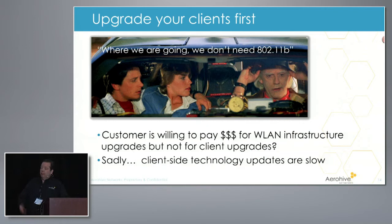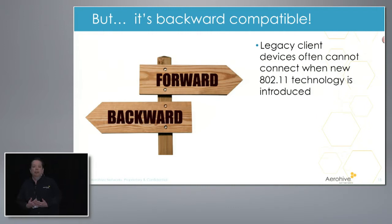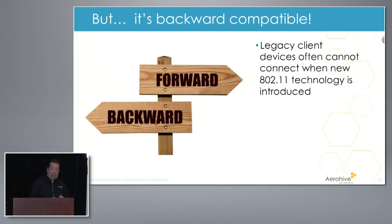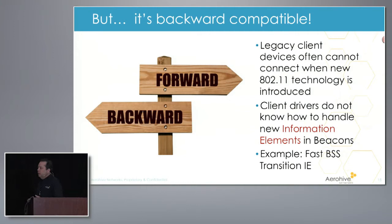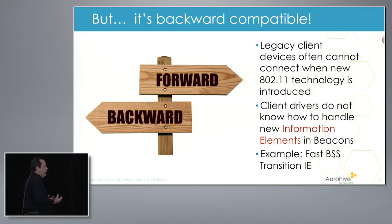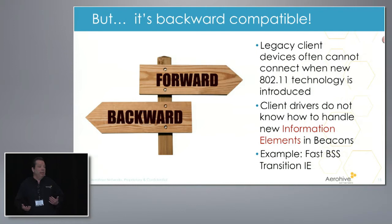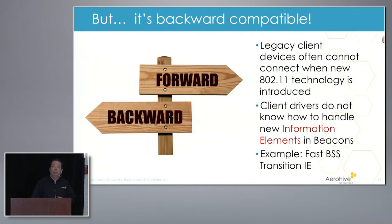Everything is backward compatible, right? Well, legacy client devices can't always connect when you introduce new technology. Maybe you upgrade your AP with new technology, and all of a sudden your legacy clients cannot connect. A lot of that has to do with client drivers not knowing how to handle the new information elements in the beacon frames and probe response frames. A common one we see all the time is 802.11r and fast BSS transition, where it puts a new information element into the beacon frames, and a lot of times legacy clients just don't know how to deal with it. Sometimes when you implement voice enterprise on your APs, you might have to have a separate SSID if you still want to support those legacy clients.